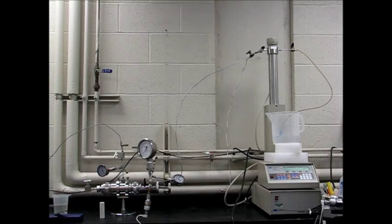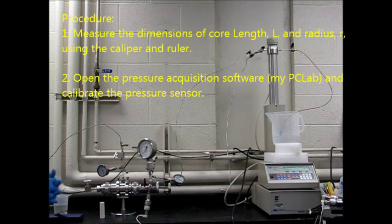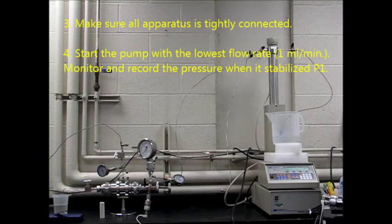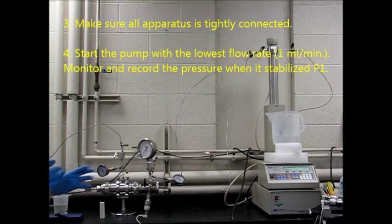The procedure of this experiment is: First, measure the dimensions of the core sample, L and radius R, using the caliper and ruler. Number two, open the pressure acquisition software and calibrate the pressure sensors.